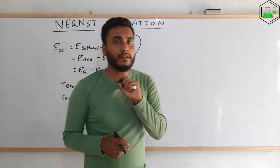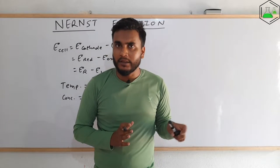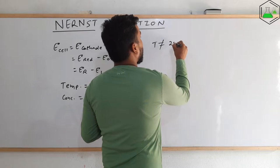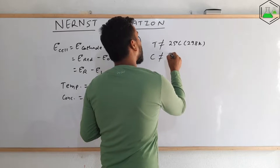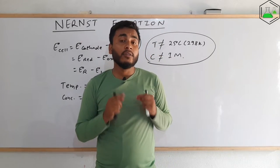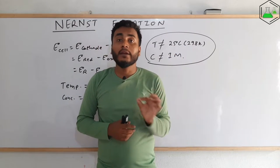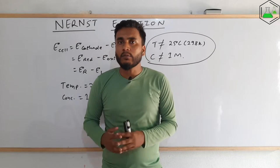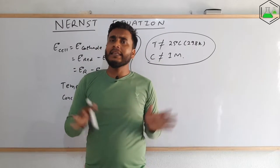But what if we need to calculate only the electrode potential — not at standard condition? That means the temperature is not equal to 25 degrees Celsius or 298 Kelvin, and the concentration is not equal to 1 M. This is the case where we need to find the electrode potential, not the standard electrode potential. We can't use the standard formula in this situation, and that was a very big problem. That's why Walther Nernst derived an equation to calculate the value of electrode potential of any cell at any condition.